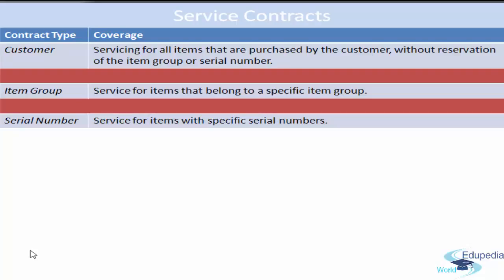SAP Business One supports the following service contract types. First is Customer — servicing of all items purchased by the customer without reservation of any item group or serial number. Next is Item Group — service for items that belong to a specific item group; for example, a contract with a customer for microchips covers service for items in the Printers group, meaning the customer receives service for all items in that group regardless of serial number. Next is Serial Number — which includes services for items with specified serial numbers.